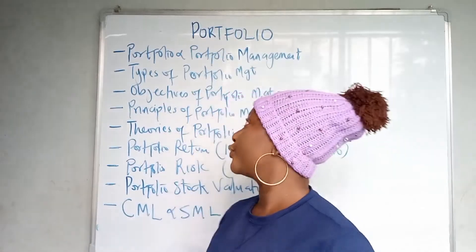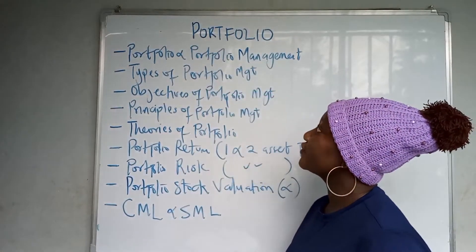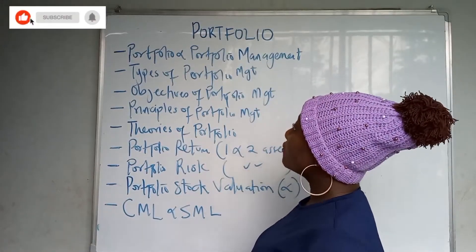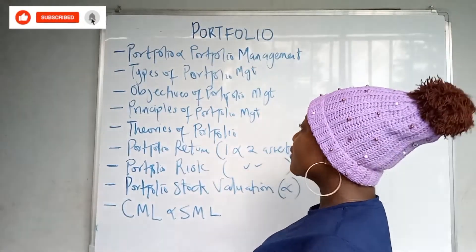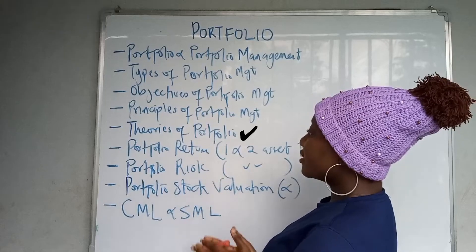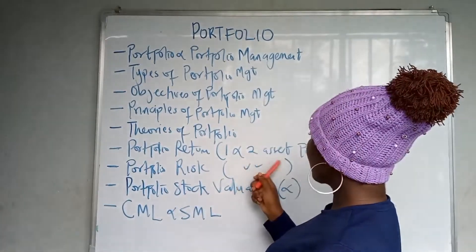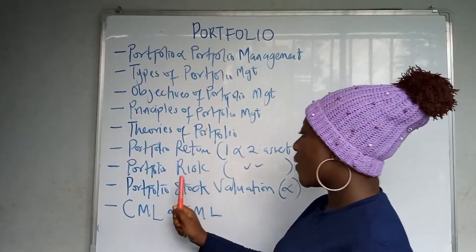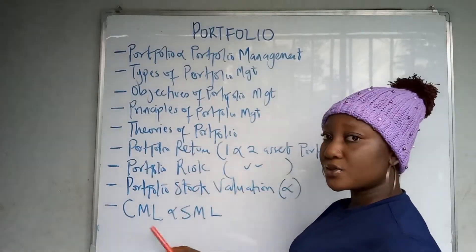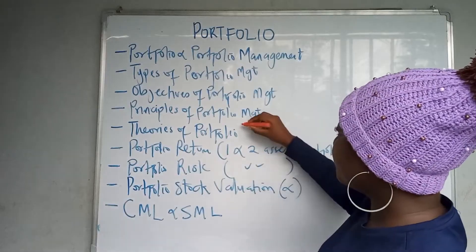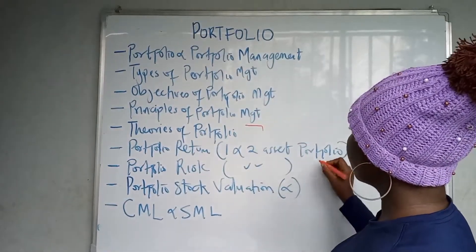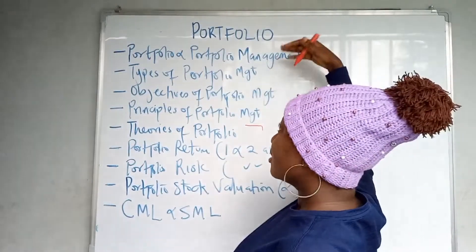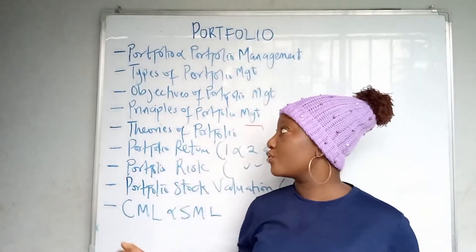This is our first class on portfolio. We're going to be discussing portfolio and portfolio management, types of portfolio management, objectives of portfolio management, principles, theories, portfolio return for one and two asset portfolios, portfolio risk, portfolio stock valuation, capital market line and security market line. From here we have the calculations — these are just introductory concepts of what portfolio theory is all about.